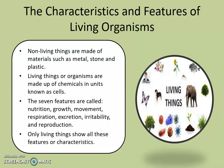The characteristics and features of living organisms. Non-living things are made of materials such as metal, stone and plastic. Living things or organisms are made up of chemicals in units known as cells. The seven features of living organisms are nutrition, growth, movement, respiration, excretion, irritability and reproduction. Only living things show all these features or characteristics.